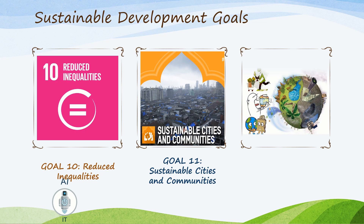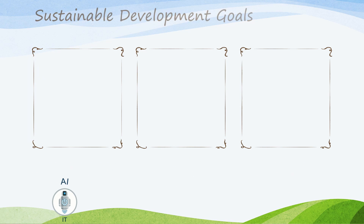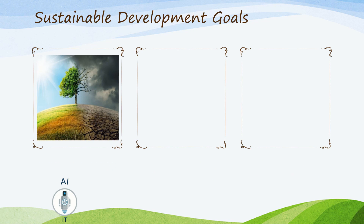The twelfth goal is Responsible Consumption and Production — to ensure sustainable consumption and production patterns. The thirteenth goal is Climate Action — to take urgent action to combat climate change and its impacts by regulating emissions and promoting developments in renewable energy.